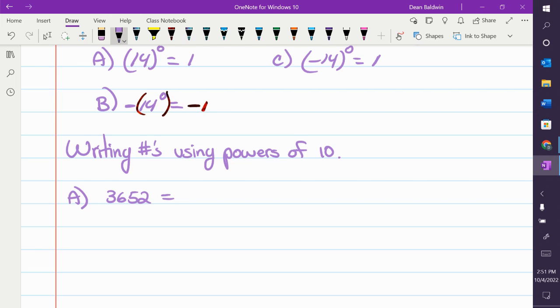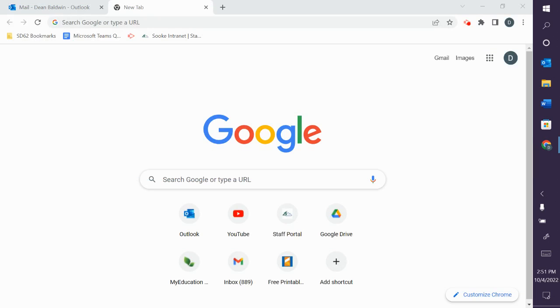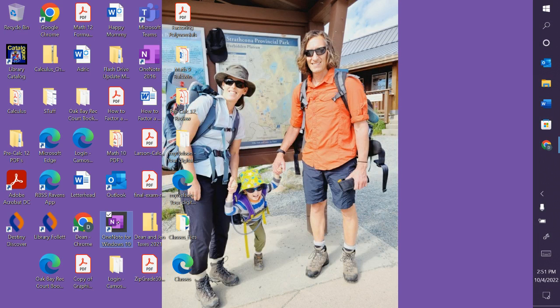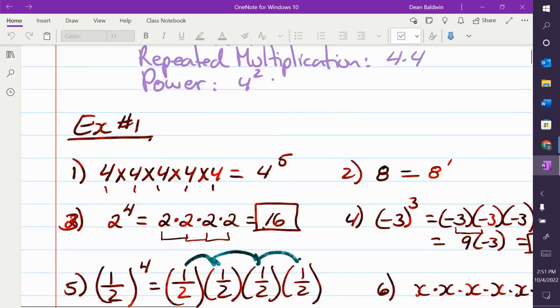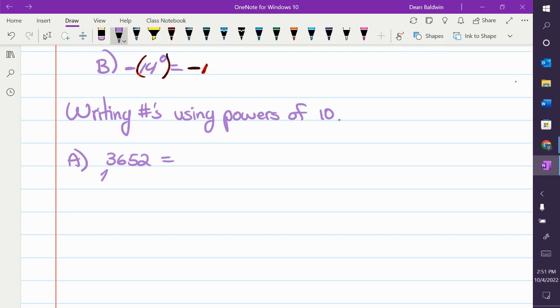So, writing numbers using powers of 10. That's my little hashtag sign is my shorthand for number. I'm too lazy to write the word number. 3,652. We want to write this in terms of essentially base 10, powers of 10. So we can rethink this as 3,000. That's the 3 out there. Plus... What position is the 6? That's hundreds. So it's 600. Plus 50, because that's tens. Plus 2. That's the exact same thing. I just broke it up into whole numbers essentially. Or nice even numbers I guess I should say.